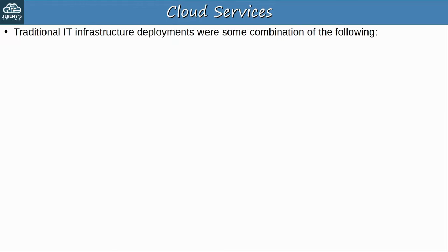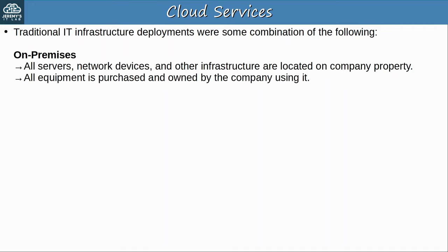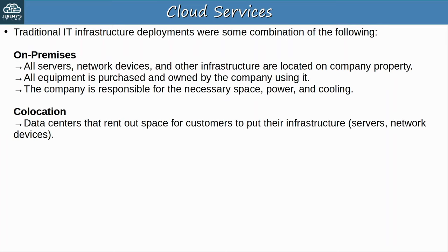So let's finally get into cloud. Traditional IT infrastructure deployments were some combination of the following. First, on-premises — this means that all servers, network devices, and other infrastructure are located on company property, from the desktops to the routers, firewalls, web servers, database servers, etc. All equipment is purchased and owned by the company using it, and they are also responsible for the space, power and cooling required for the devices. Another option is co-location — data centers that rent out space for customers to put their infrastructure, such as their servers and network devices.